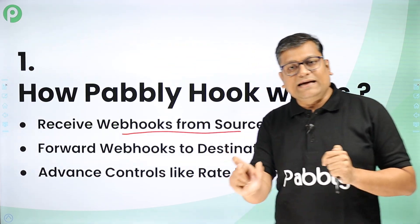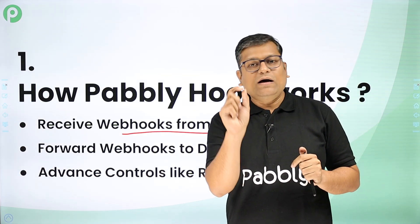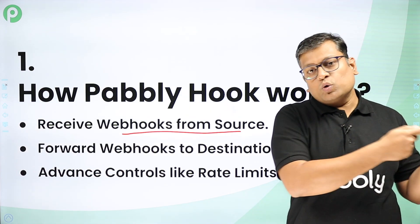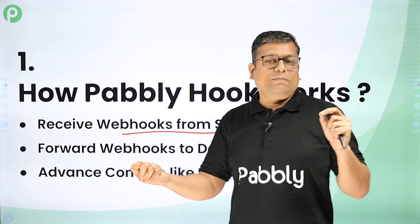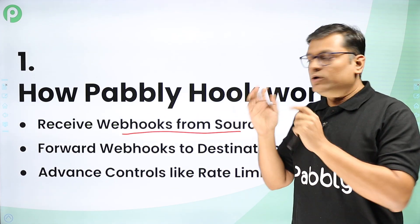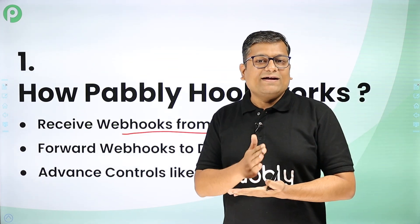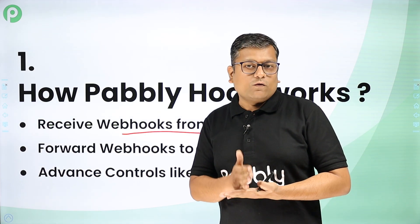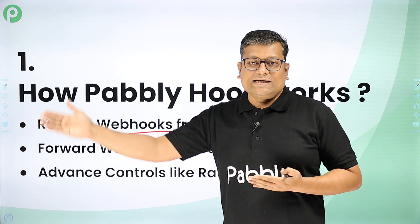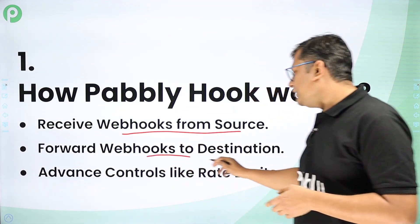Whenever you create a connection inside your Pablyhook account, you are given a webhook URL to which you can ask the source to send the webhook. When the source sends the webhook to that URL, you can define the rate limit at which you want to forward all incoming webhooks to a destination.